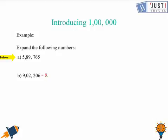9 is sitting at the lakhs place, so I'll put 9,00,000. Then there's a 0 at the ten thousands place so we can skip that. Then we have 2 at the thousands place, so 2000. Then we have 2 at the hundreds place, so 200. Then again a 0 at the tens so we can skip, and then 6.